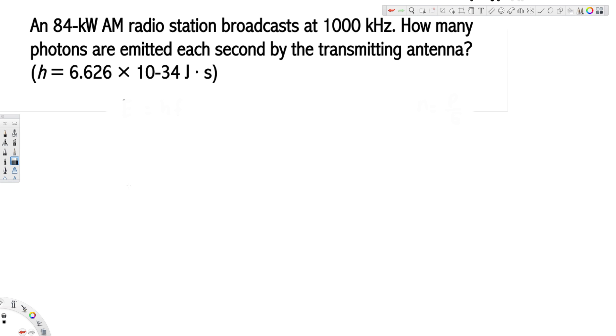What's going on guys, let's look at this problem right here. This question is asking: an 84 kilowatt AM radio station broadcasts at 1000 kilohertz, how many photons are emitted each second by the transmitting antenna?